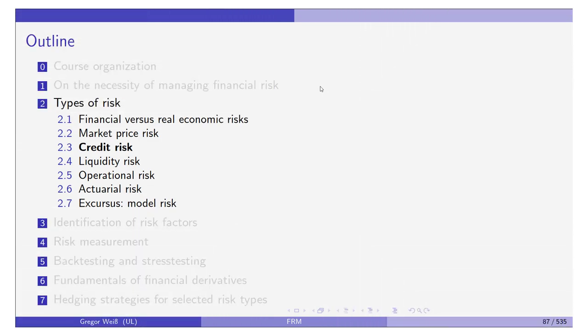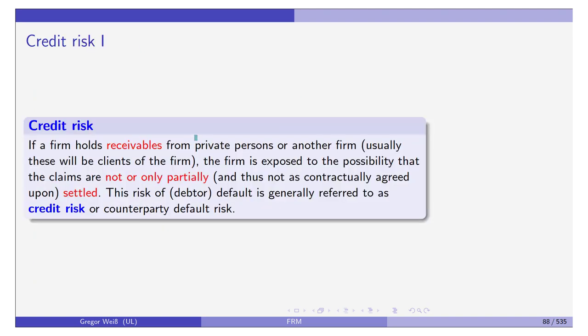Next, we'll talk about credit risk, which is obviously for banks the most important type of risk they have. Credit risk is a little bit more complicated than it seems. Any company, any sector is exposed to credit risk.